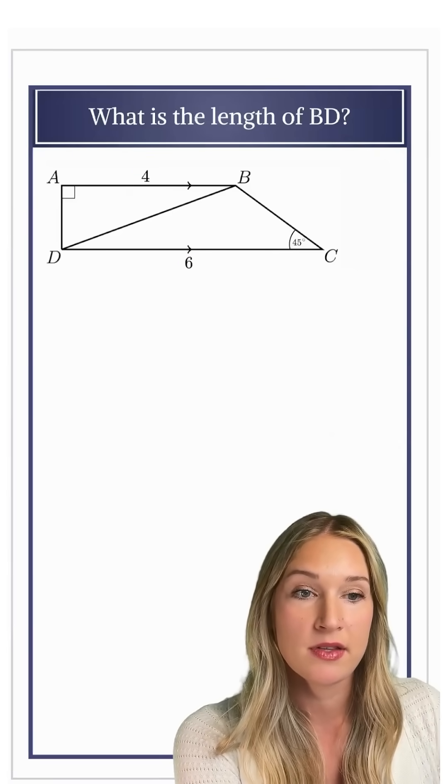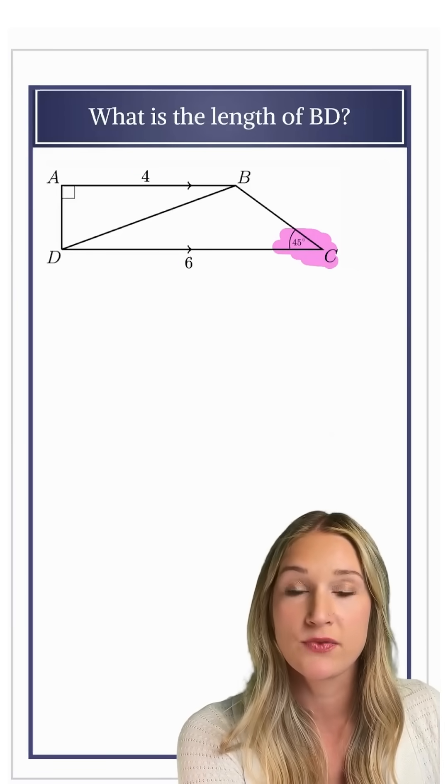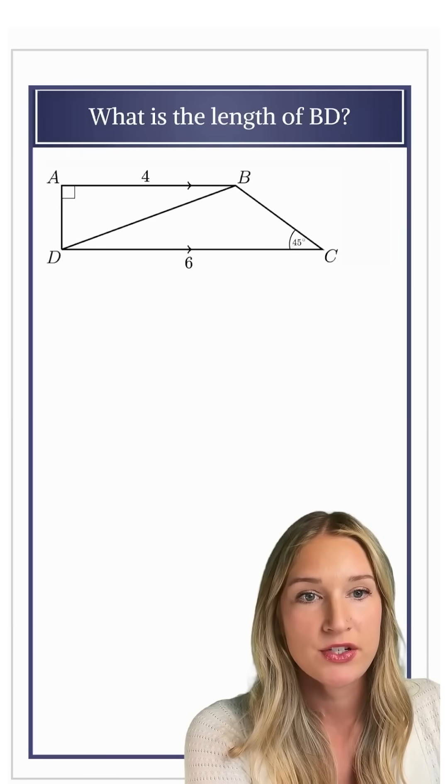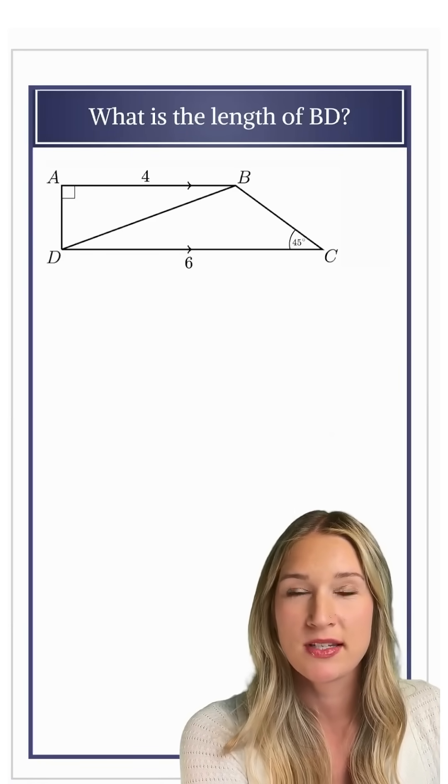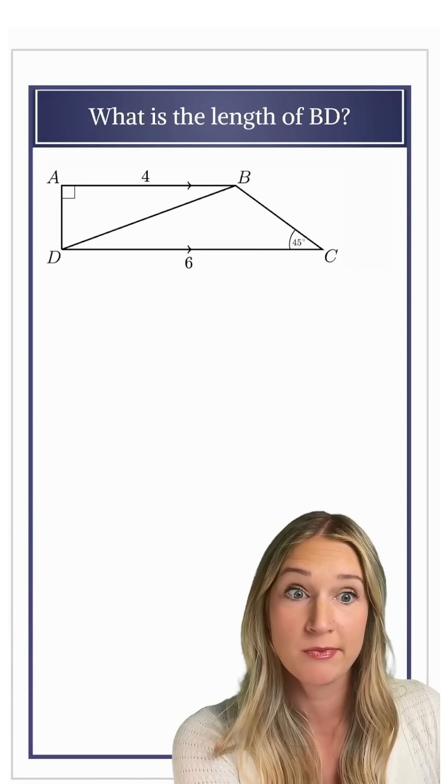We know that down in the bottom right, angle C is 45 degrees. So what I want to do is break this up into somewhat more familiar shapes with some right angles.